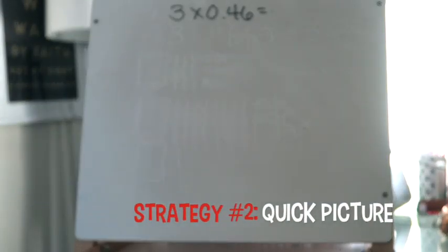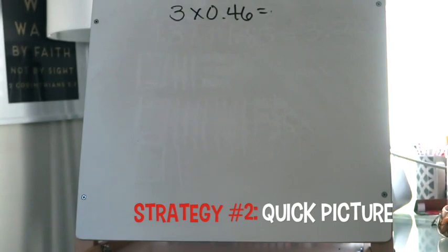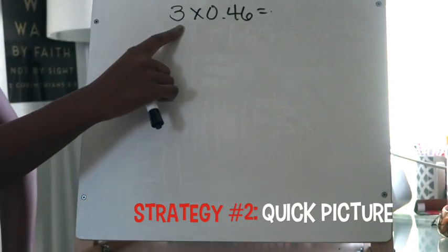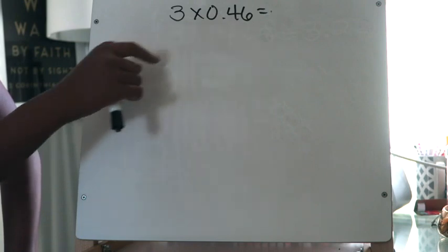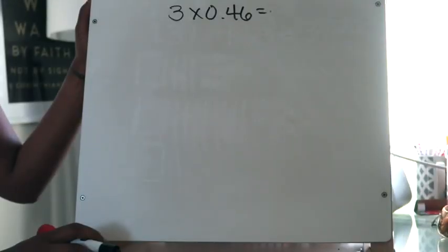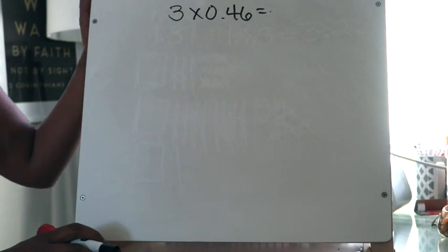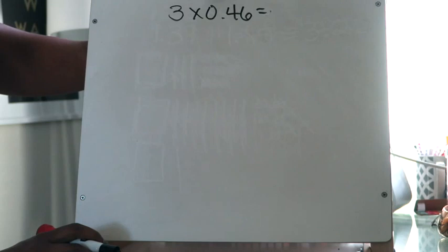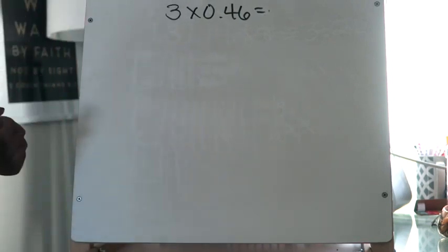In this example we're going to multiply 3 times 0.46 using a quick picture. Quick pictures are familiar from chapter three where we were adding and subtracting — today the only difference is we're using them for multiplication. The first thing to recognize is how many times you're going to draw out 46 hundredths. This problem is telling me three times I'm going to draw out 46 hundredths.